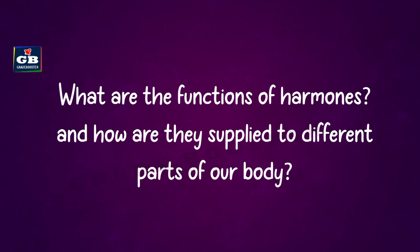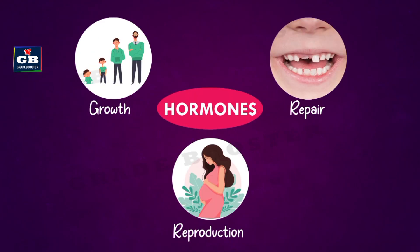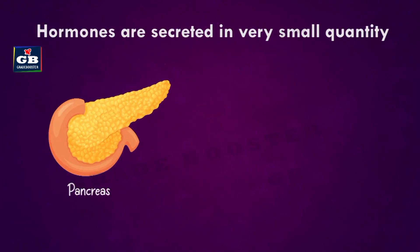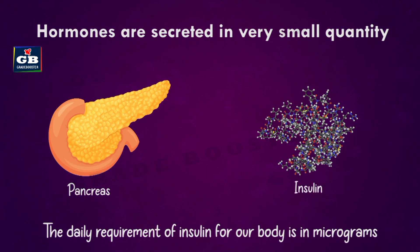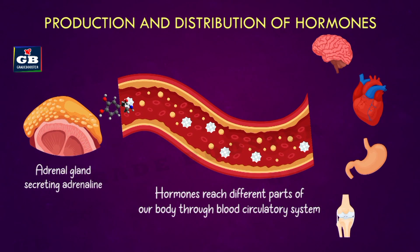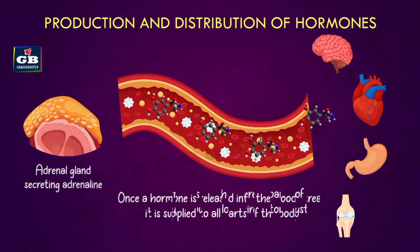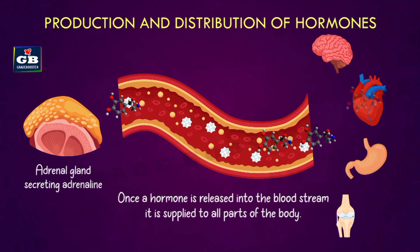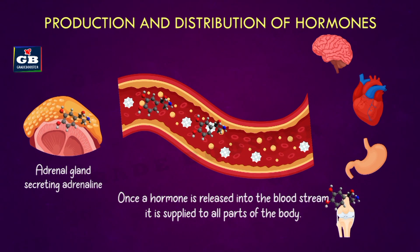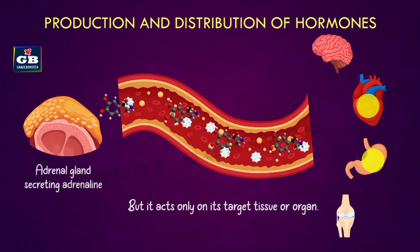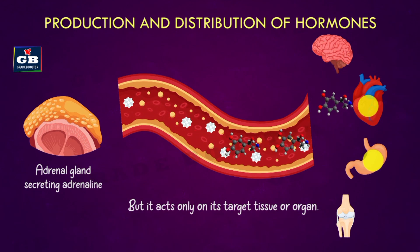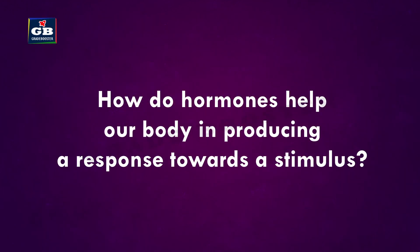Hormones help to control many body functions such as growth, repair, and reproduction. Hormones are secreted by glands in very small quantities and reach different parts of our body through the blood circulatory system. Once a hormone is released into the bloodstream, it is supplied to all parts of the body but acts only on its target tissue or organ.